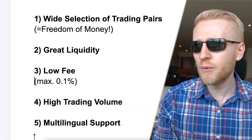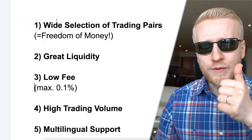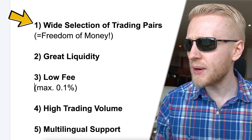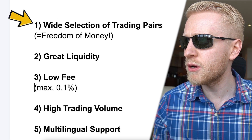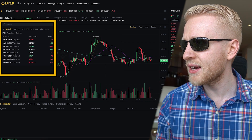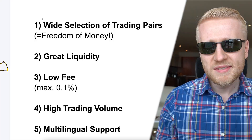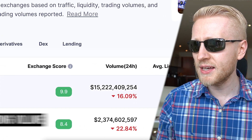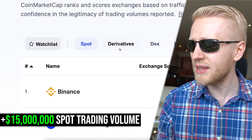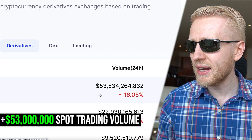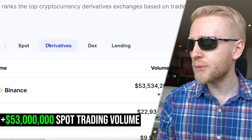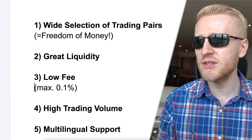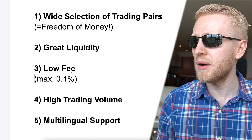There are five quick benefits of futures trading on Binance. First, there is a wide selection of trading pairs — hundreds of different pairs, giving you freedom. Second, great liquidity: on CoinMarketCap, Binance is ranked number one in both spot trading and derivatives trading worldwide with the highest trading volume, which means you can buy assets for the best price.